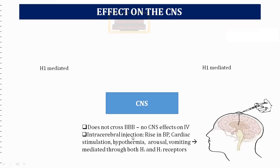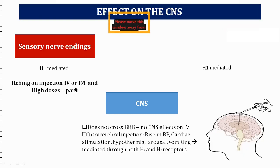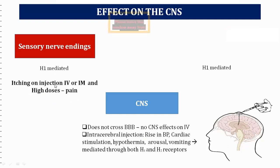Sensory nerve endings are H1-mediated. Stimulation of pain neurons requires high doses of histamine, producing pain sensation. Itching is also seen at the injection site with IV or intramuscular histamine, due to activation of sensory nerve endings in that area.